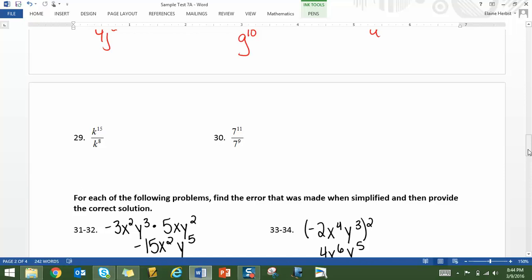29, k to the seventh. And 30 is 7 squared. When you subtract 11 minus 9, and 7 squared is 49.